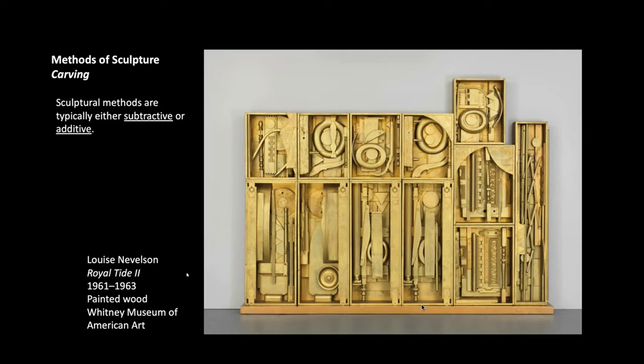Royal Tide II is our first example of the method of carving — she's carving wood that she then paints. Thinking about methods of sculpture, they're either subtractive or additive: you're either taking material away from something or adding it. Carving is subtractive — you're taking away the wood to make your image. It could be stone or wood. You're really dealing with taking away negative space, carving out the negative space around the object to create the positive image.